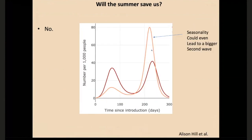Will the summer save us? No. Seasonality, if it decreases transmission, could lead to an even larger second wave of infection. We're not even seeing much evidence geographically that seasonality is going to be very important. One of the reasons we don't get colds in the summer is because we already got them in the winter. There's slightly better transmission in colder times of the year, but that doesn't mean the virus can't transmit in the summer — like a meteor coming into the solar system, eventually falling into an orbit because there are better conditions in the winter.